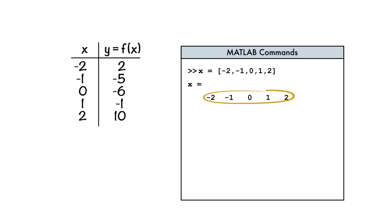Notice that this creates a row vector. But what if an application calls for a column vector instead? No problem. We use semicolons in place of the commas.